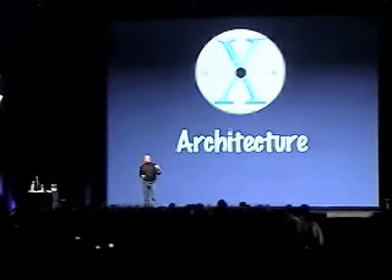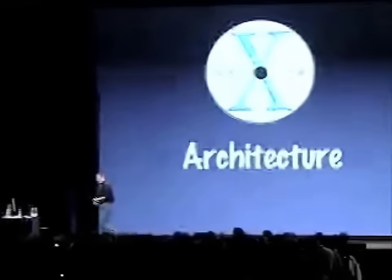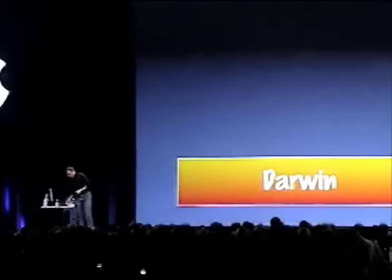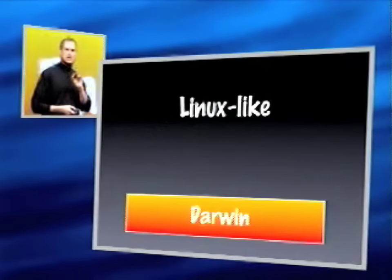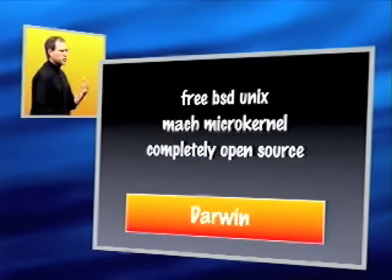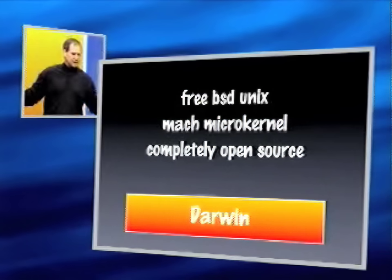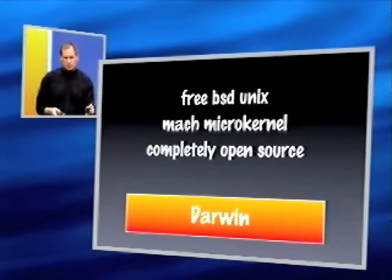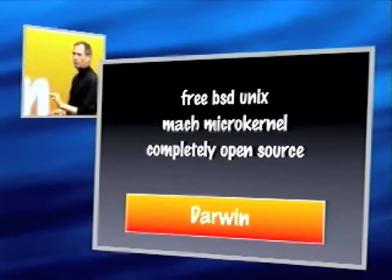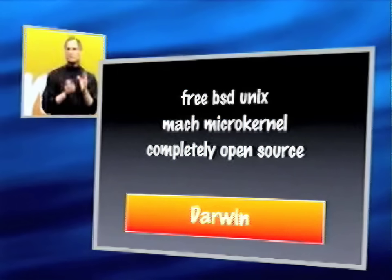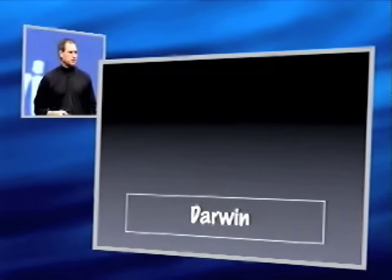I'd like to go through the architecture of Mac OS X with you. To start off with, we need a kernel, and that kernel we call Darwin. Darwin's amazing — it's a super modern kernel. It's got protected memory, preemptive multitasking, modern networking, all the things you'd expect, done in a very elegant way. And it's very Linux-like. It's got FreeBSD Unix, which is the same as Linux, so it looks almost the same to developers. It's got a Mach microkernel and it's completely open source. You can go to Apple's website today and download it, as 75,000 people already have. And we're getting a lot of help from the Mac community to make it better and better. So we're extremely excited about Darwin.